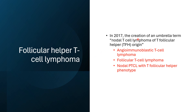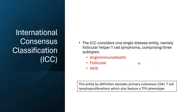In 2017, an umbrella term was created called nodal T cell lymphoma of T follicular helper origin. Under this umbrella term, there are three entities: angio-immunoblastic T cell lymphoma, follicular T cell lymphoma, and nodal peripheral T cell lymphoma with T follicular helper phenotype.